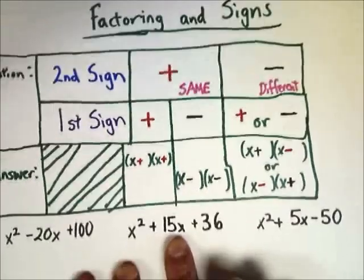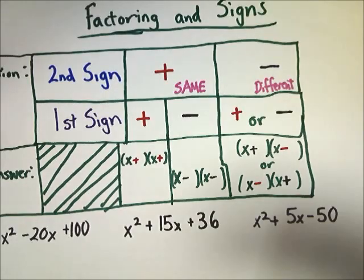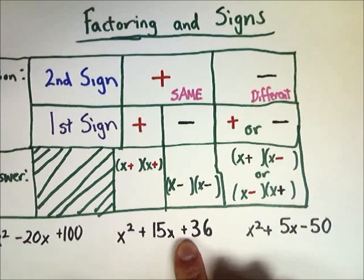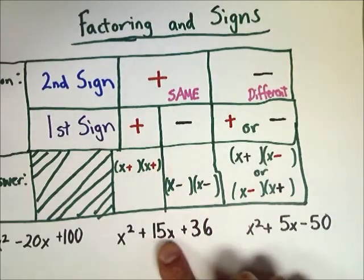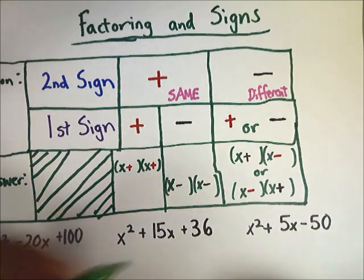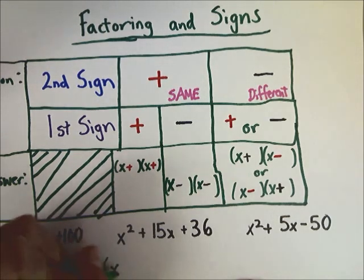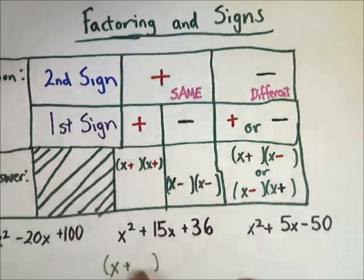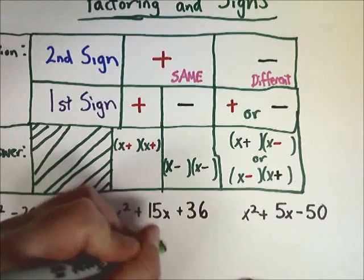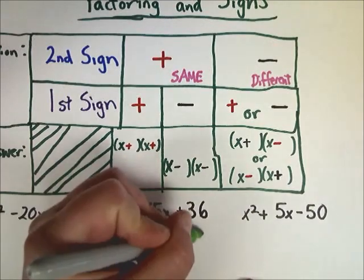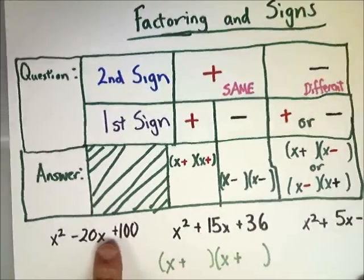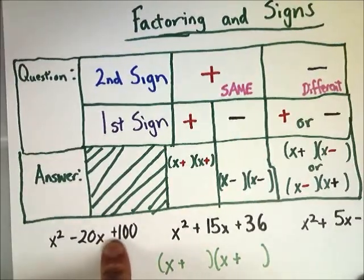For instance, let's look at this one. It's the same exact question that we have there. My second sign is plus. My first sign is also plus. So my answer is going to be something in the realm of x plus something. I'm going to put something here eventually. I'm going to do that by factoring this number.